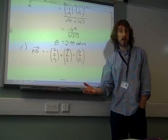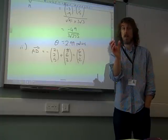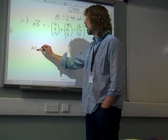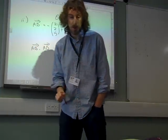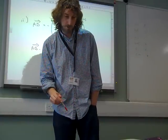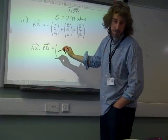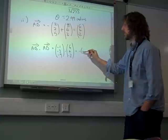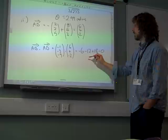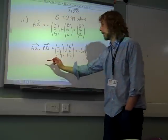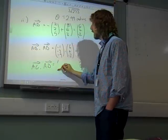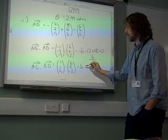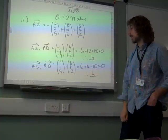We need to show it's perpendicular — that's the scalar product again. Because if the angle between them is 90°, cos 90° = 0, so the scalar product would be 0. So AB · AD: AB was (-1, -3, -9) dotted with (6, 4, -2), which gives us -6 - 12 + 18 = 0, therefore they are perpendicular. And AC · AD: AC was (1, 1, 5) dotted with (6, 4, -2), which gives us 6 + 4 - 10 = 0, therefore they are also perpendicular.